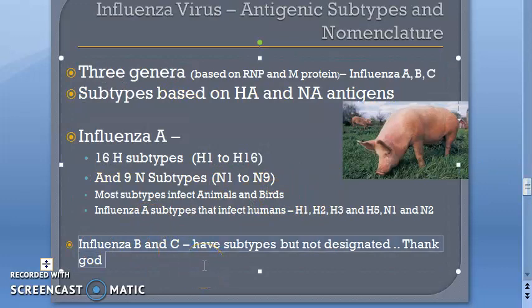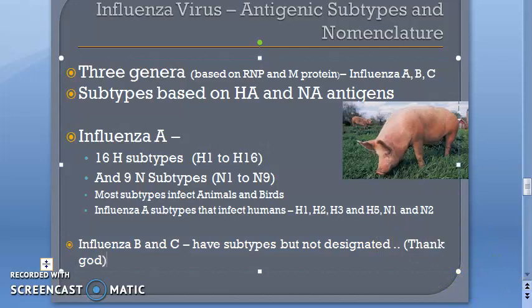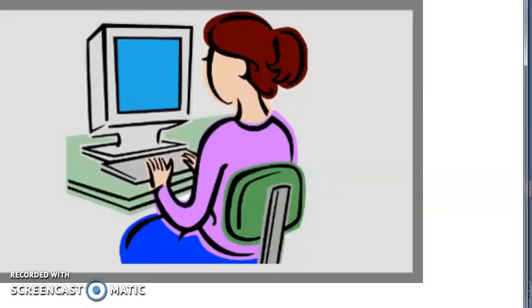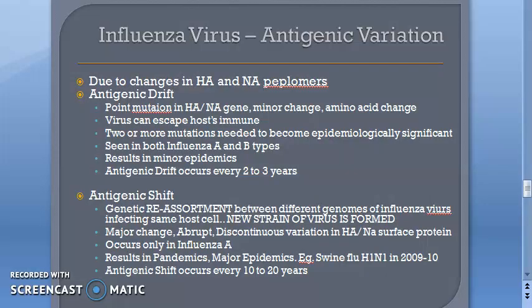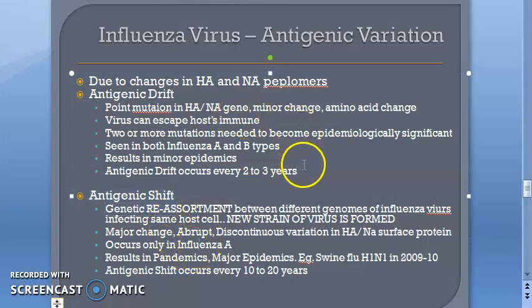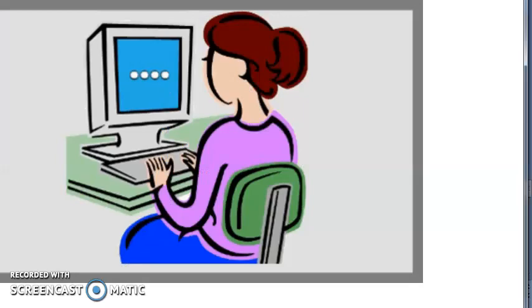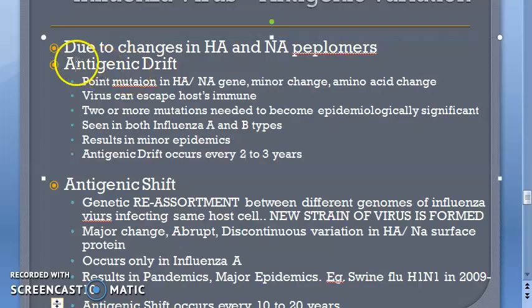Influenza B and C also have subtypes but they are not formally designated. Now moving on to antigenic variation, which is very important for the exam. Antigenic variation is due to changes in the HA and NA peplomers. There are two types: antigenic drift and antigenic shift.